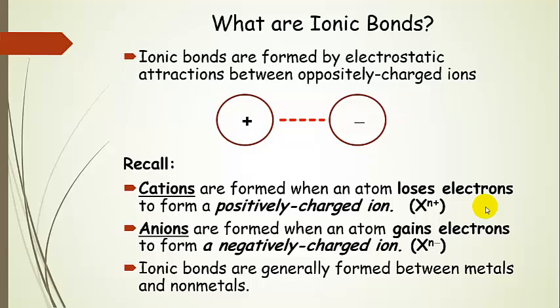Now let's just remind ourselves what cations are. Basically, if you have an atom and it loses one or more electrons, it's going to lose some negative charge and form a positively charged ion. So there will be more protons than electrons in that ion.